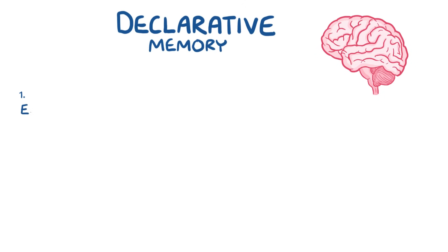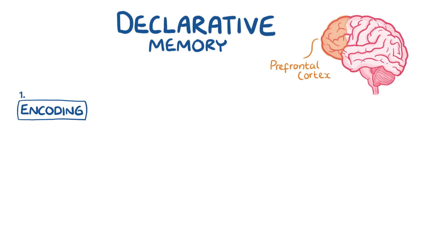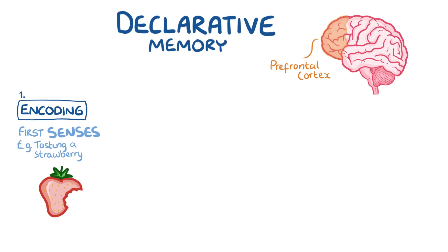The process of making declarative memory can be broken down into four stages, and each stage involves a specific part of the brain. The first stage is encoding, and it occurs in the prefrontal cortex. Encoding begins right when you first sense something — say, you're tasting a strawberry. Encoding would involve classifying the strawberry according to sweetness, size, colour, and texture. Think of encoding as a process of breaking down an experience into manageable parts for the rest of the brain to use.